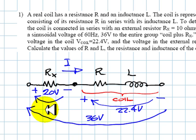So we have three voltages and we know that according to KVL, Kirchhoff's voltage law, the sum of these two voltages, the voltage in the coil and the voltage in Rx, have to be 36 volts.